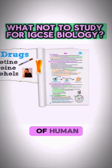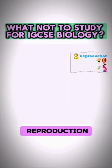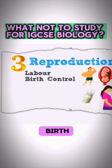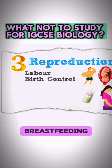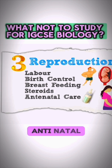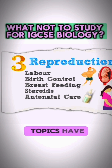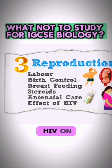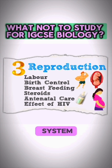Regarding the topic of human reproduction, you should eliminate all things related to labor or giving birth, birth control, breastfeeding, steroids, and antenatal care. All of these topics have been eliminated, in addition to the effect of HIV on the immune system.